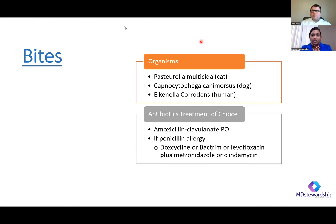We get a lot of questions on different types of bites. A cat bite is caused by Pasteurella; a dog bite is caused by Capnocytophaga; a human bite is caused by Eikenella. The best treatment is amoxicillin-clavulanate oral antimicrobials. If a patient cannot take amoxicillin-clavulanate — especially if they have a penicillin allergy — then you can use doxycycline, Bactrim, or levofloxacin plus metronidazole or clindamycin as combination treatment. It's important to treat appropriately so that infection is improving.